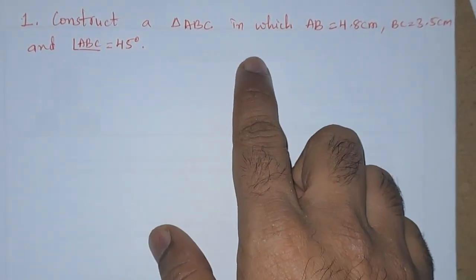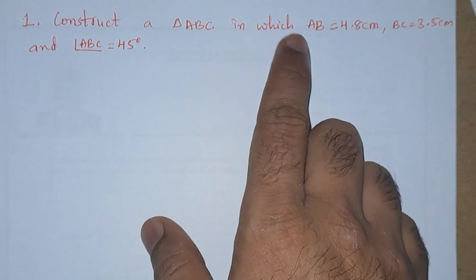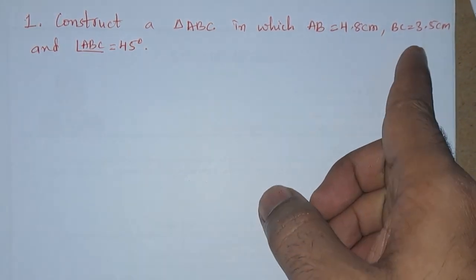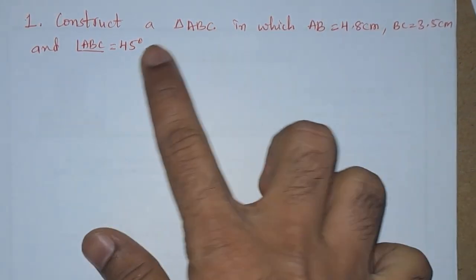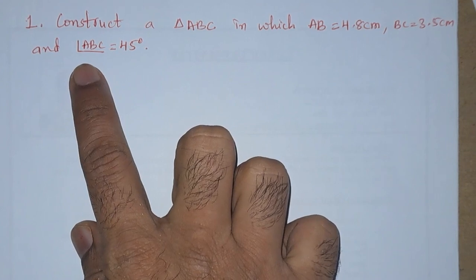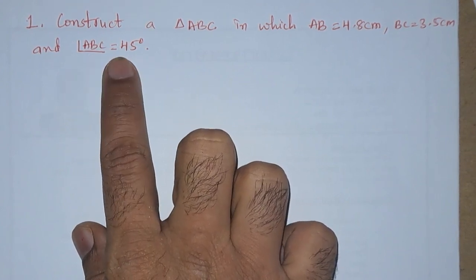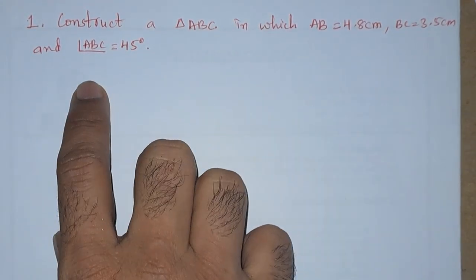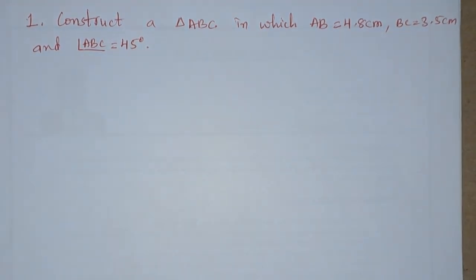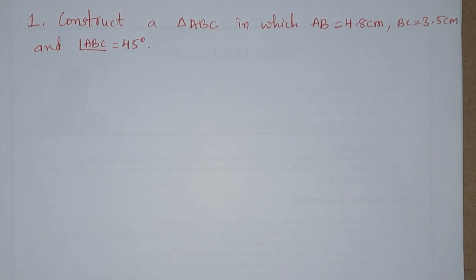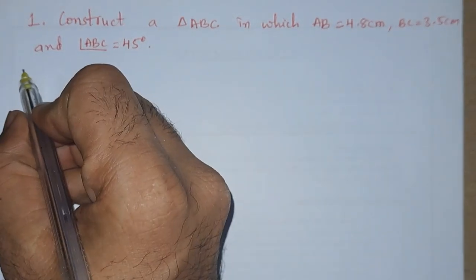First problem: construct a triangle ABC in which AB equals 4.8 centimeters, BC equals 3.5 centimeters, and angle ABC is 45 degrees. They have given two sides and one angle, so that means you can use the SAS rule - side, angle, side.